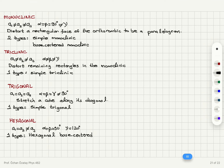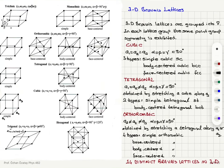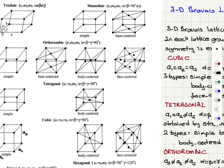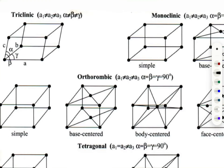After monoclinic we have triclinic. A1, a2, a3 are not equal, and alpha, beta, and gamma are not equal. This is obtained by distorting the remaining rectangles in the monoclinic. There is only one type: simple triclinic.